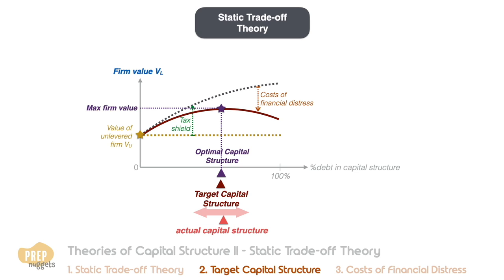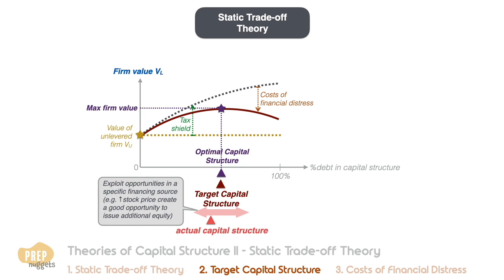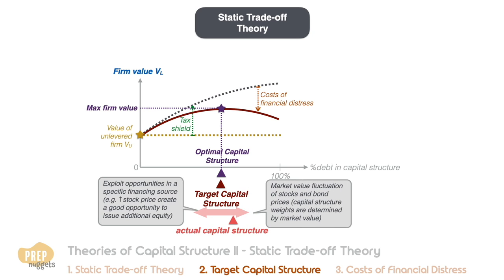One reason for deviation is that management may choose to exploit opportunities in a specific financing source. For example, a temporary rise in the firm's stock price may create a good opportunity to issue additional equity, resulting in a higher percentage of equity than the target. The other reason is simply due to market value fluctuations in the company's stocks and bond prices — because capital structure weights are determined by market values, market fluctuations may cause the firm's actual capital structure to vary from the target.